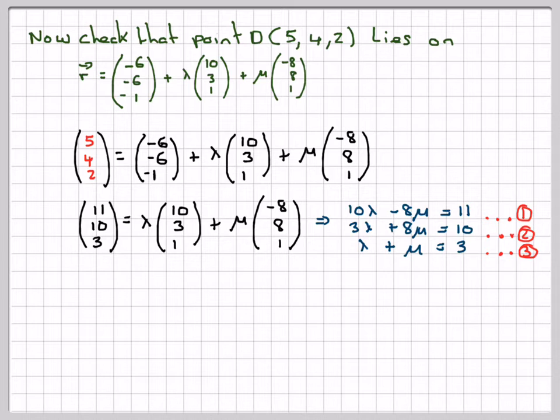We're going to take two of them and solve it for two, and check consistency for three. From equation 1 plus equation 2, we're going to have 13λ—the 8s will disappear—is equal to 11 plus 10, which is 21. λ is equal to 21/13.